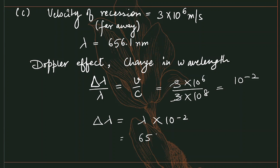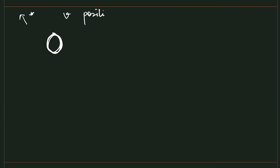So Δλ = 656.1 × 10⁻² = 6.561 nanometer. Since the star is receding away from the Earth, the velocity is taken as positive, which means lambda is increasing. This is a red shift.